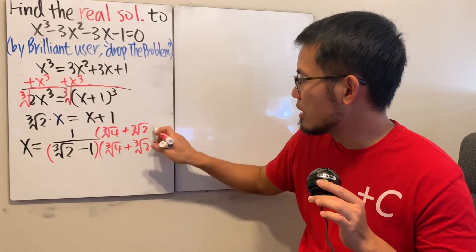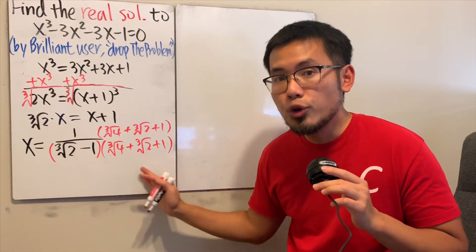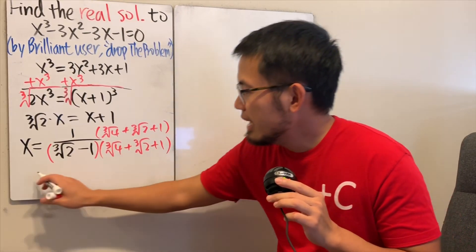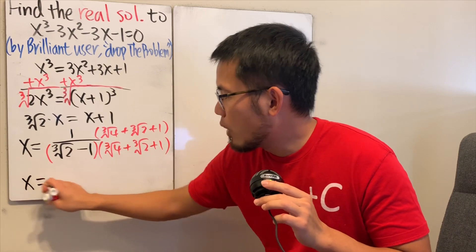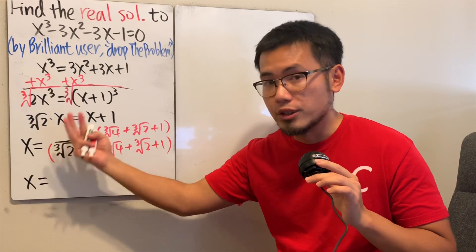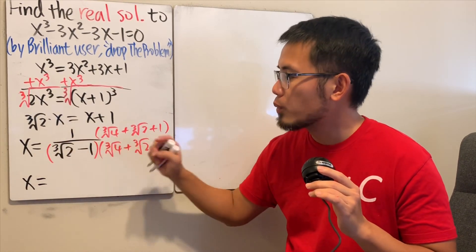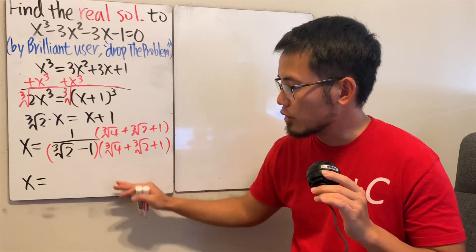And this is just the difference of two cubes formula, right? In the end, we end up with x equals... On the bottom, when you multiply this out, you just need to do this to the third power, which is 2, and then minus this to the third power, which is 1. 2 - 1 is just 1 on the bottom.